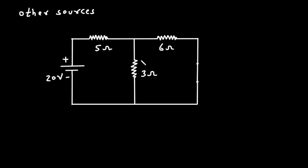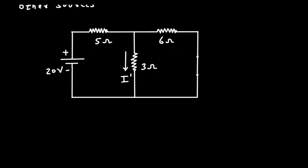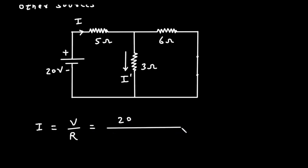Now we will find the current through this 3 Ohm resistor. Let's say this current is I1, or we can call it I prime. To find this current we can use the current division rule. For current division rule, first of all we need to find the main current. So I — first we have to find this main current.